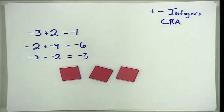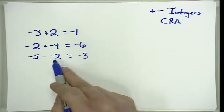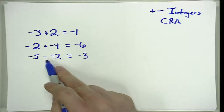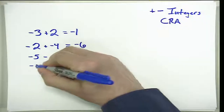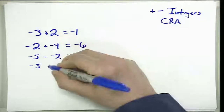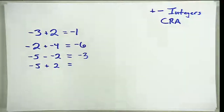One of the things we're going to have to do as we work through a CRA sequence of instruction is be able to tie this to the abstract rules that kids need. We know one of the things we typically ask kids to do is not think about the subtraction of a negative — we ask them to add the opposite. So in this case we would ask them to add a positive 2.